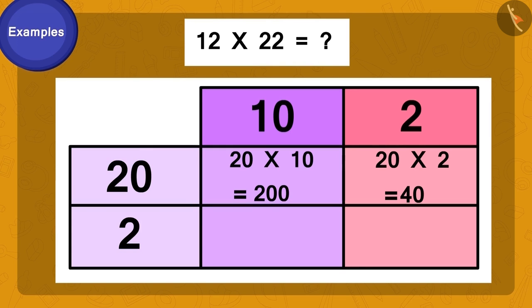Now, we multiply 2 of 22 by 2 of 12. That's 2 times 2, which is 4. Finally, multiply 2 of 22 by 10 of 12. What would we get? 20.